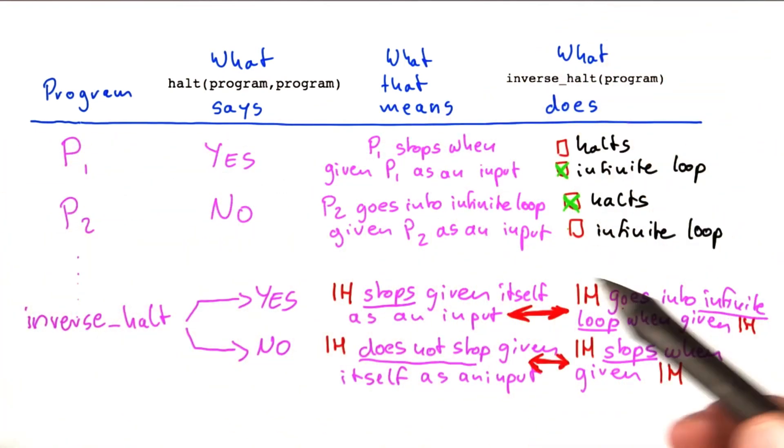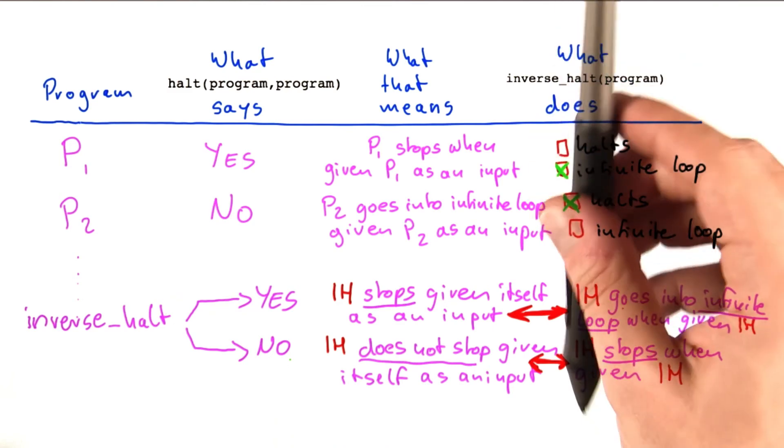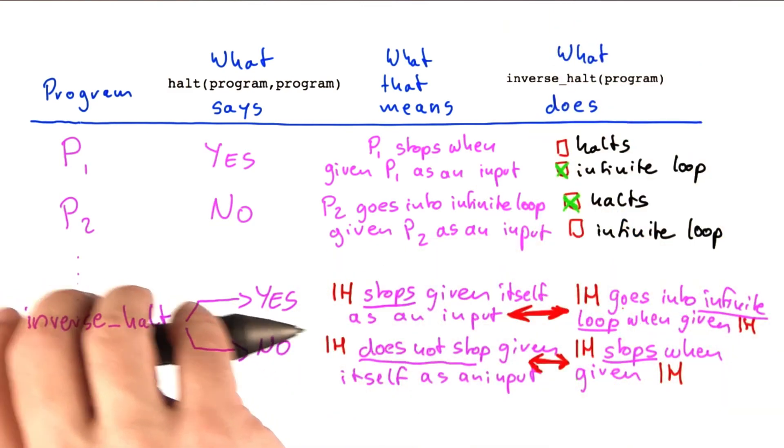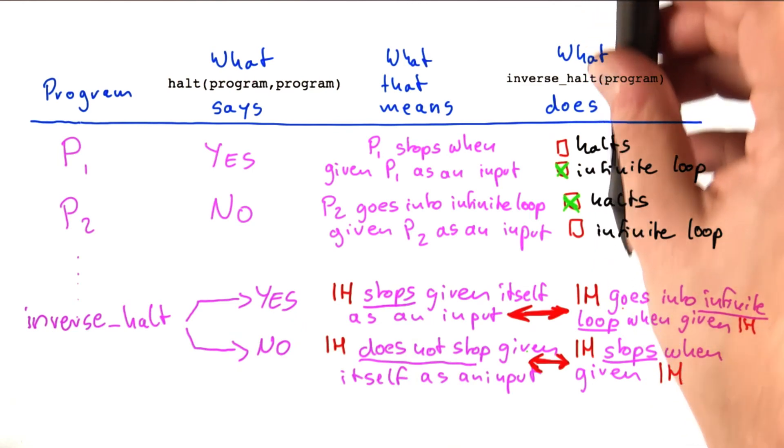So constructing it this way or this way, those are both compatible views. With one exception, once we feed inverse halt into this table, these two logics crash because the conclusions that we draw in this way are exactly the opposite of the conclusions that we draw in this way.